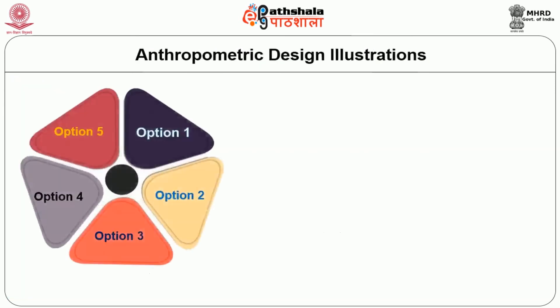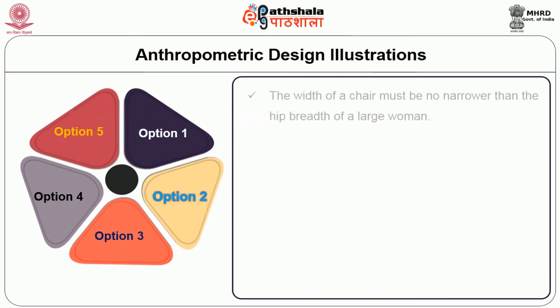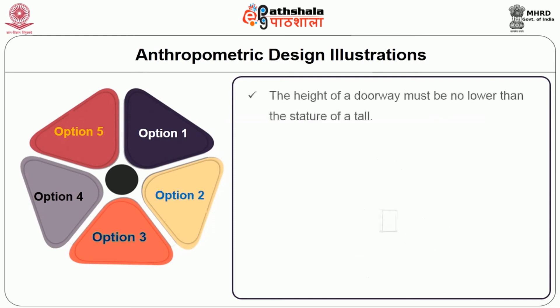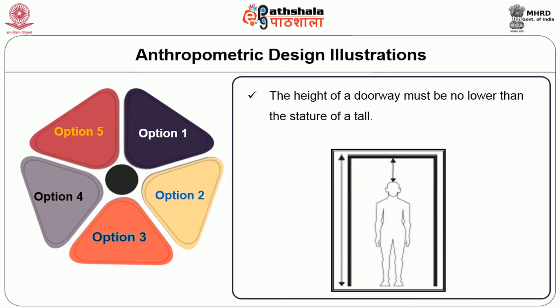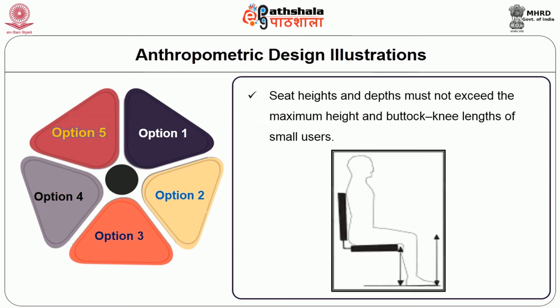Several anthropometric design illustrations demonstrate key principles. First, a door handle must not be lower than the highest standing knuckle height of an individual. Second, the width of a chair must not be narrower than the hip breadth of women — that is the most important measurement. Third, the height of a doorway must be no lower than the stature of the tallest person. Fourth, a door lock must not be higher than the normal person's vertical reach. Fifth, seat heights and depths must not exceed the maximum height and buttock-to-knee length of small persons.